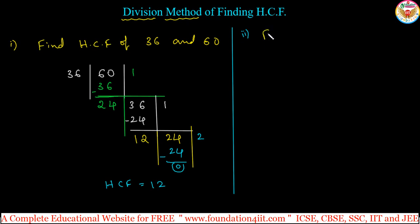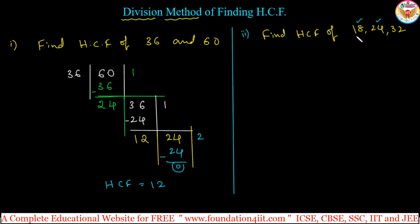Let us see one more question — not only two numbers but more than two. Find the HCF of 18, 24, and 32. These three numbers — you have to find the highest common factor. So take any two of the three numbers first. I am taking 18 and 24.